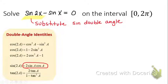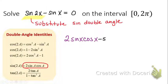So I'm going to substitute that in place of sine 2x, giving me 2 sine x cosine x, minus sine x, equals 0. Now, what do you think I'm going to do? Take out a GCF. What is the GCF? Sine x — so I'm going to factor out the sine of x.